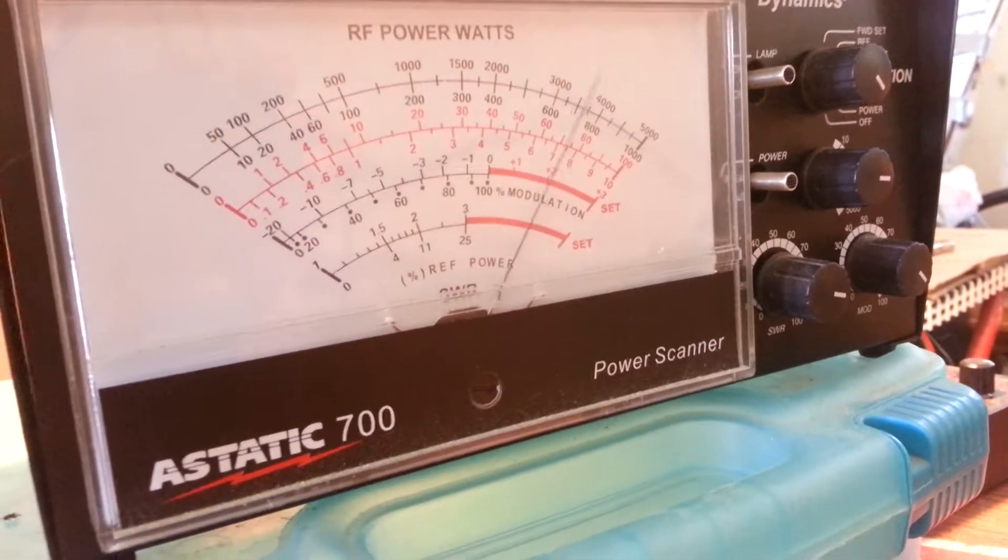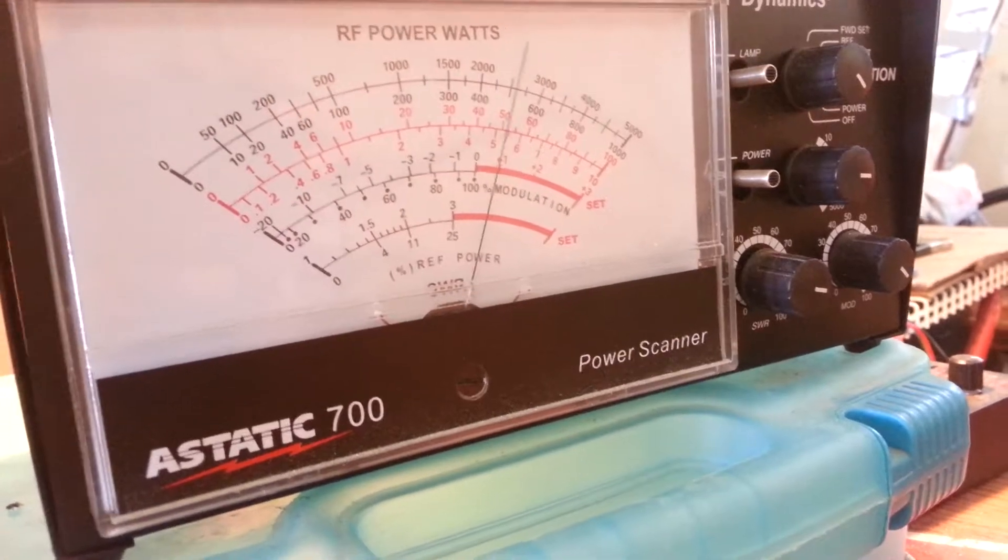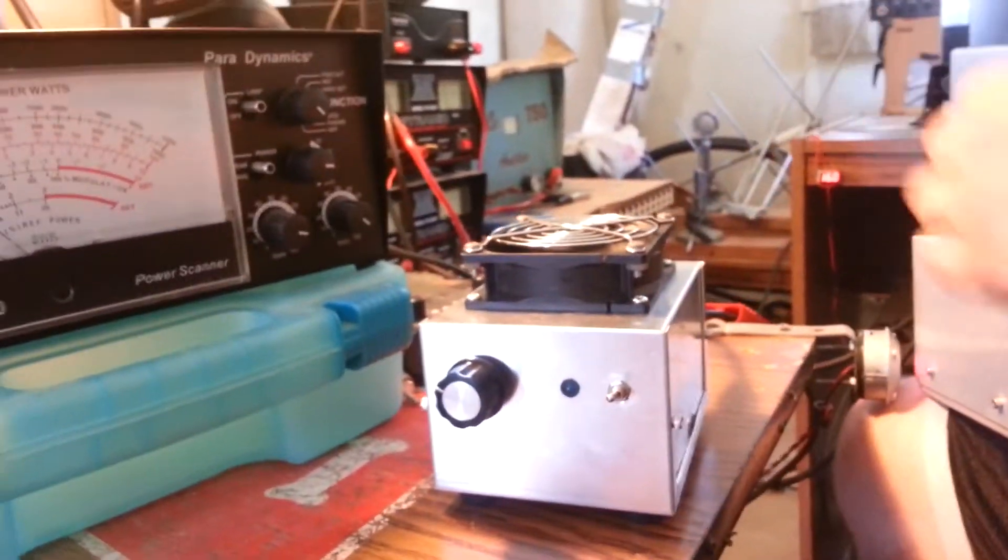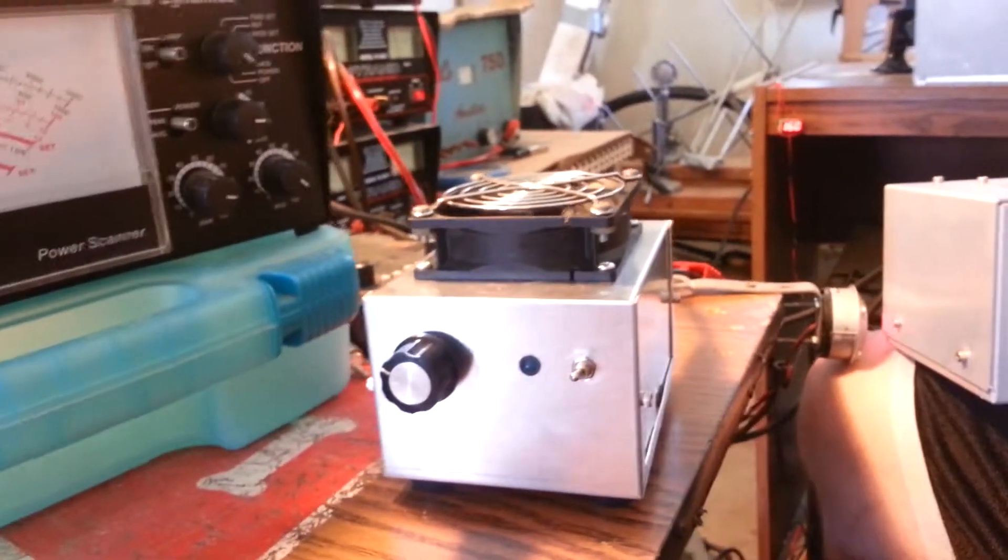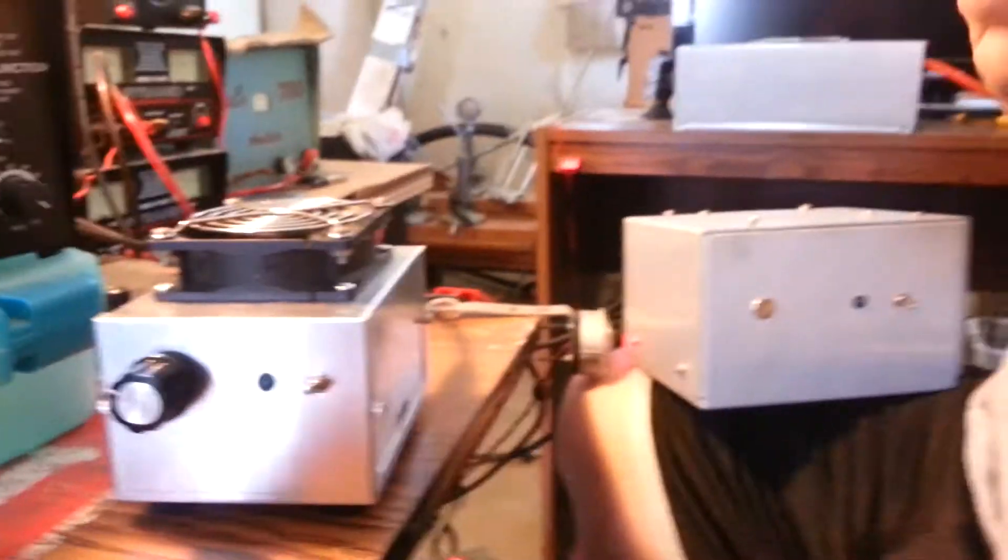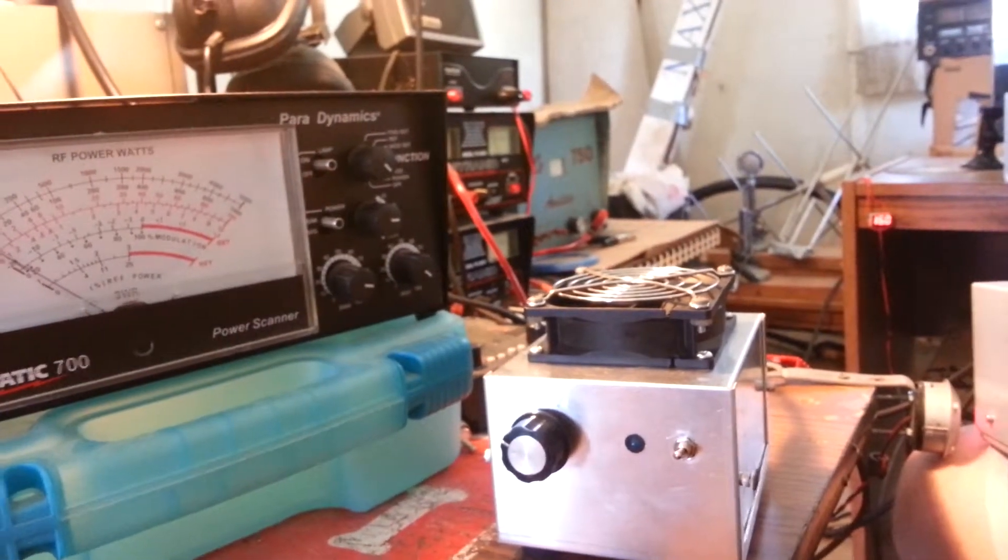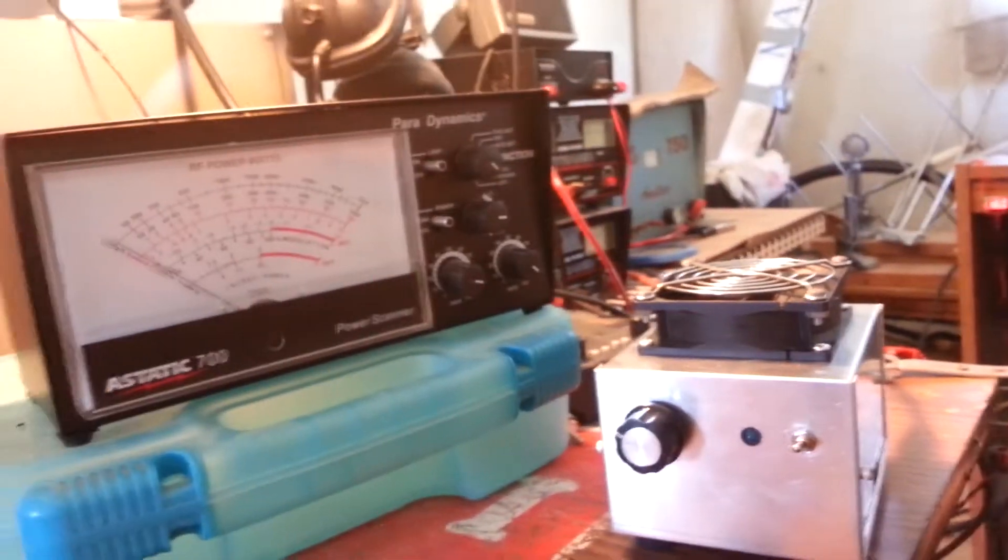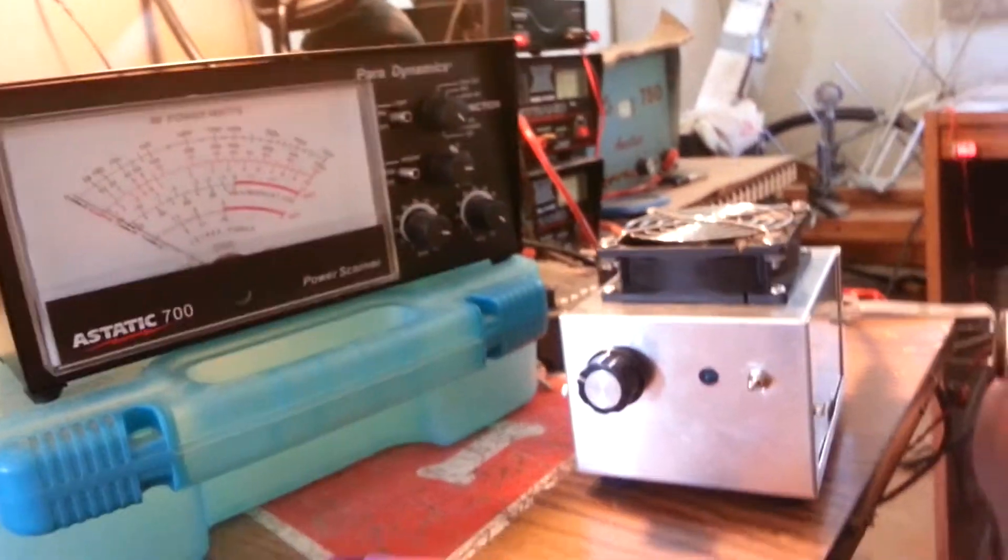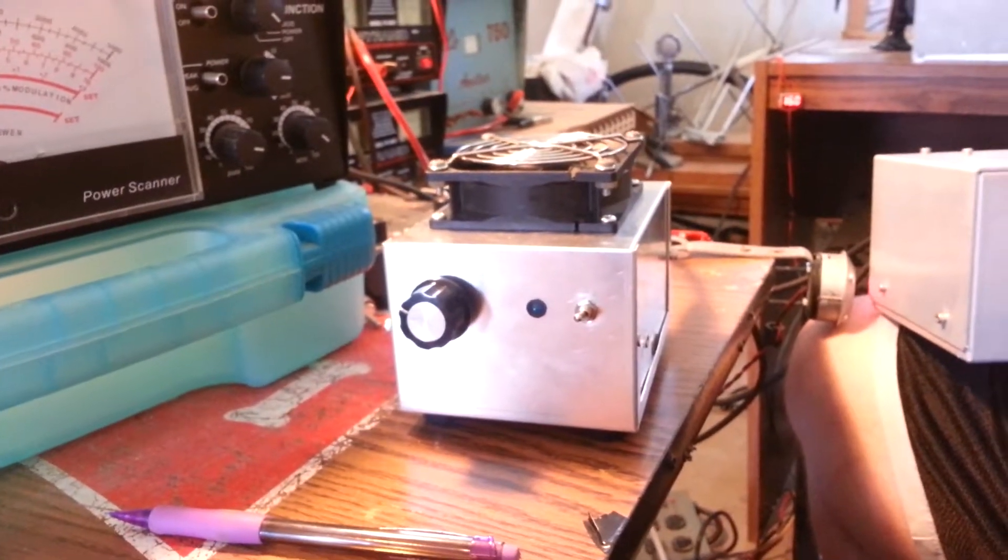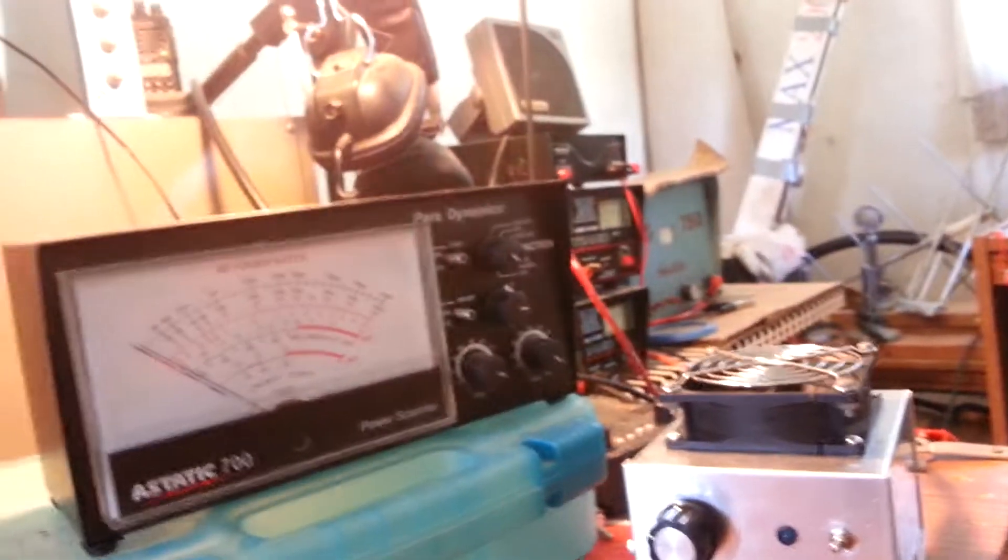All righty. Well, there you go. Doing what a 42879 should do, peaking around 800, 900 watts with probably about an 80, 90-watt drive, maybe a little less. About 750 PEP with about a 60, 65-watt drive. So they're not bad. I think everything turned out good.